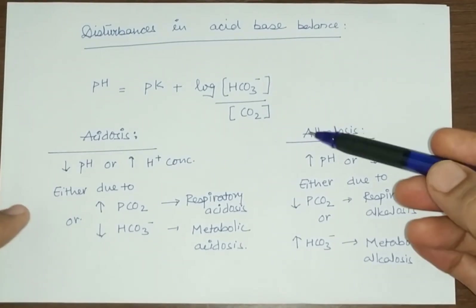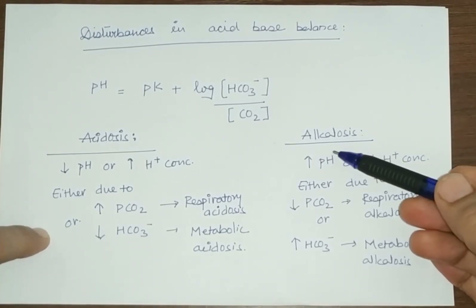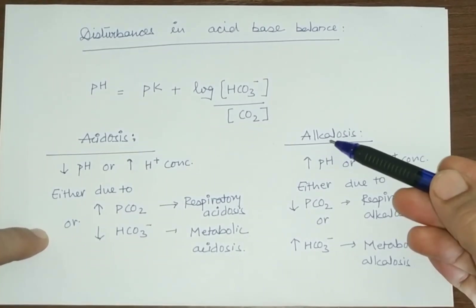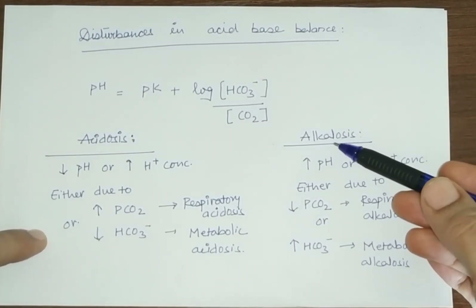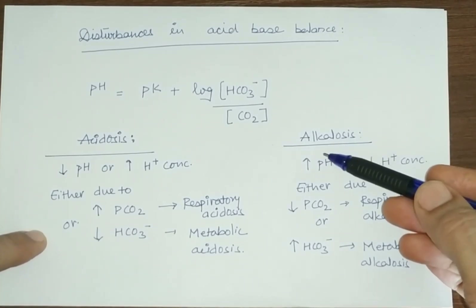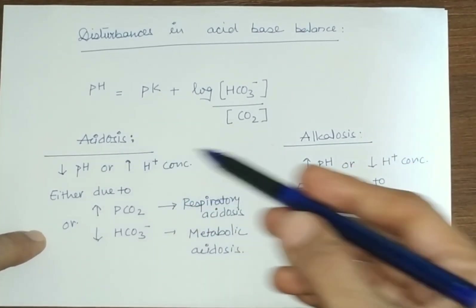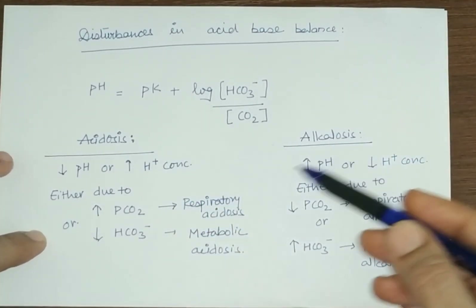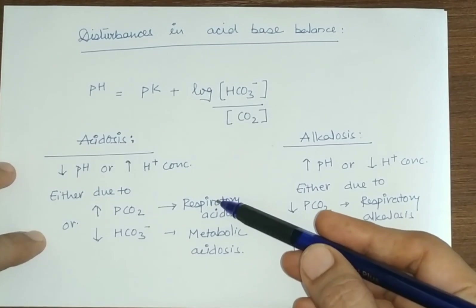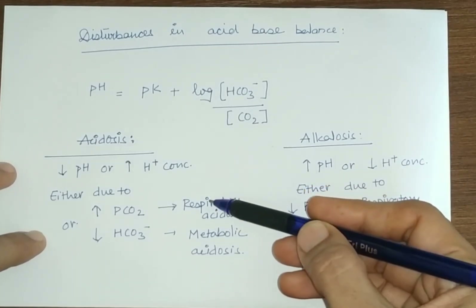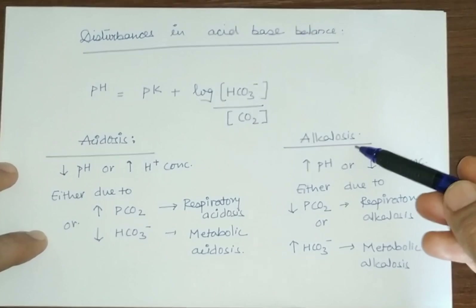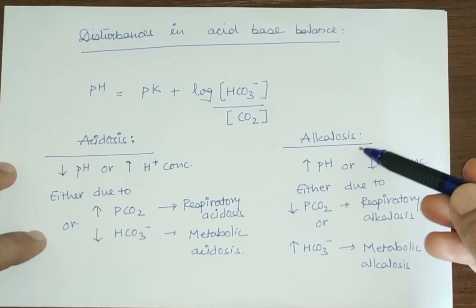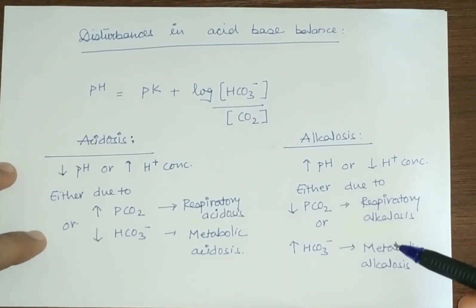As we have discussed, regulation of pH is very important for physiological activities. Acidosis and alkalosis are each of two varieties: respiratory acidosis and metabolic acidosis, and similarly respiratory alkalosis and metabolic alkalosis.